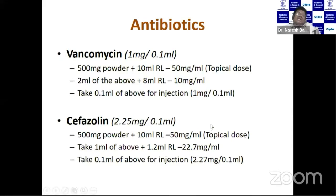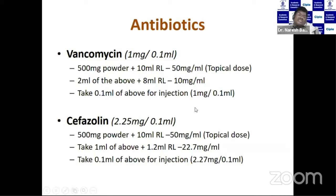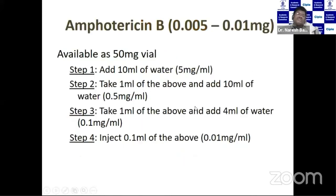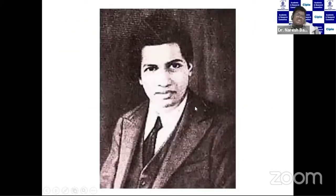Vancomycin is a wonderful drug — so far no microbial organism has developed resistance to it, and it is quite safe. We can go up to 6 mg without damaging the retina. Ceftazidime is used at 2.25 mg. In case of fungal endophthalmitis, we can go for Amphotericin B.